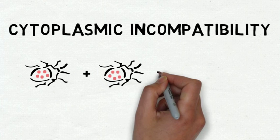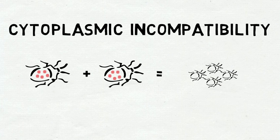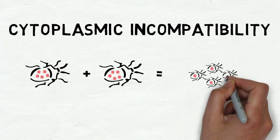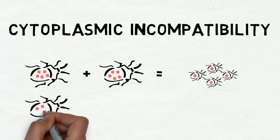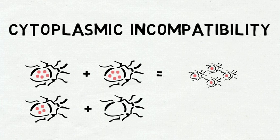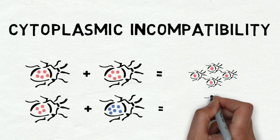But if one insect infected with a particular strain of Wolbachia mates with another insect infected with a different strain, then the eggs they produce will not be viable and result in no offspring.